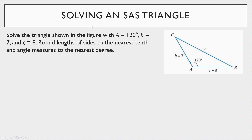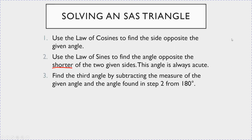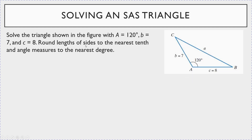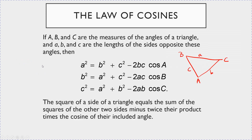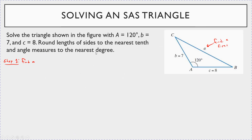Let's solve the triangle shown with A = 120°, b = 7, and c = 8, rounding lengths to the nearest tenth and angles to the nearest degree. For step one, we use the law of cosines to find side a: a² = b² + c² − 2bc·cos(A), which gives a² = 7² + 8² − 2(7)(8)·cos(120°).